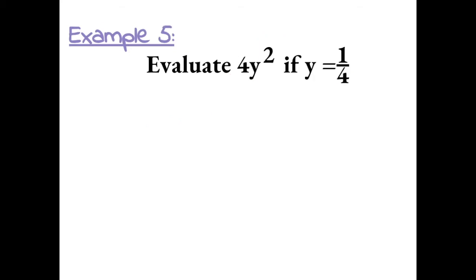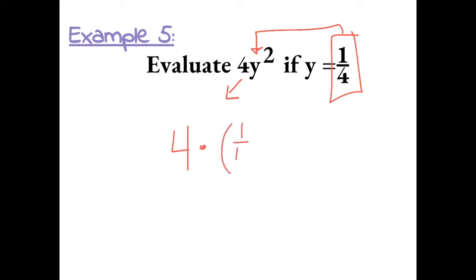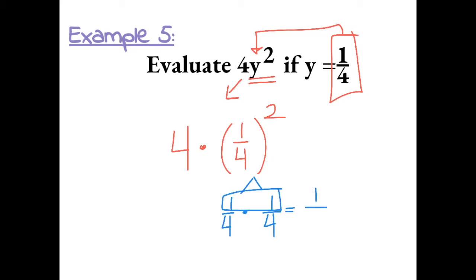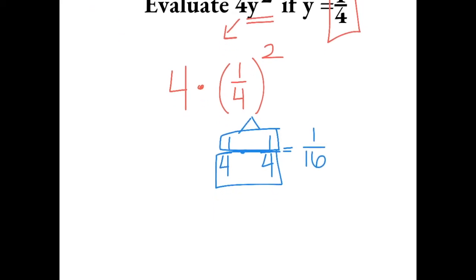Example 5: Evaluate 4y squared if y equals 1 fourth. So I have to plug in 1 fourth for y. But first, I need to remember that a number next to a variable means multiplication. So I'm multiplying 4 times 1 over 4 squared, because here we have y squared and y is 1 over 4. So we need to do 1 over 4 squared, which means 1 over 4 times itself. This becomes 1 times 1, which is 1, and 4 times 4, which is 16. So 1 over 4 squared equals 1 over 16.